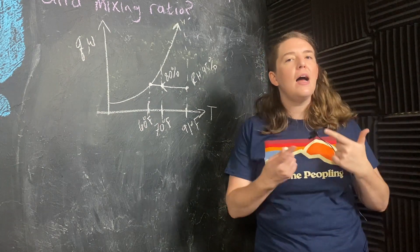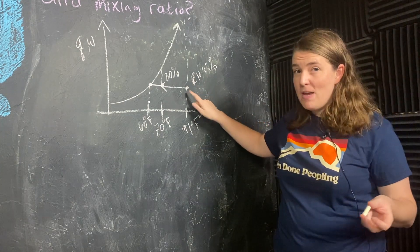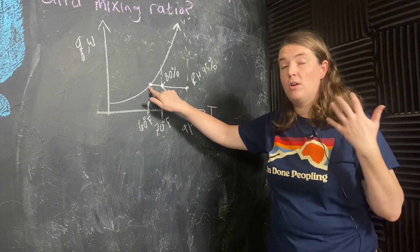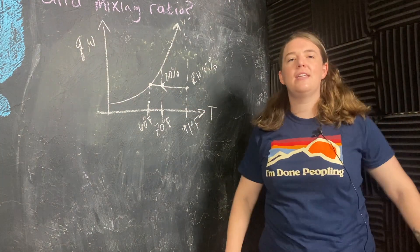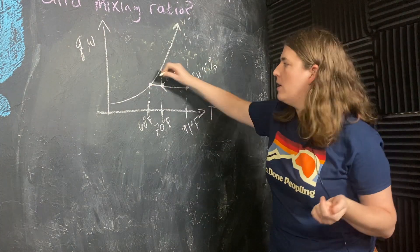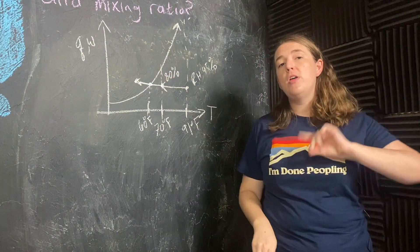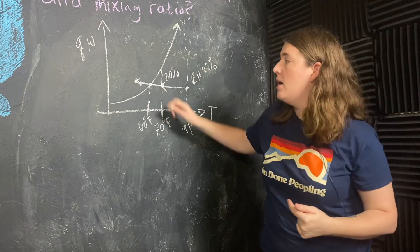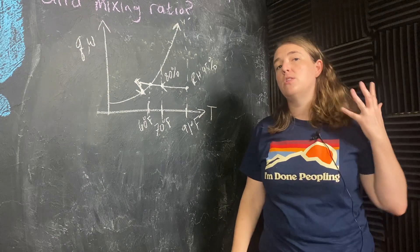Relative humidity is oftentimes the thing that we're more interested in, especially for what you and I experience day to day. Because with the same amount of water vapor, I can go from there's going to be absolutely no rain today to definitely look outside for clouds and maybe some precipitation. Now what happens if we cool this air parcel even further? Well now we are super saturated, and so we're going to start condensing water vapor, getting ourselves back to saturation as quickly as possible.